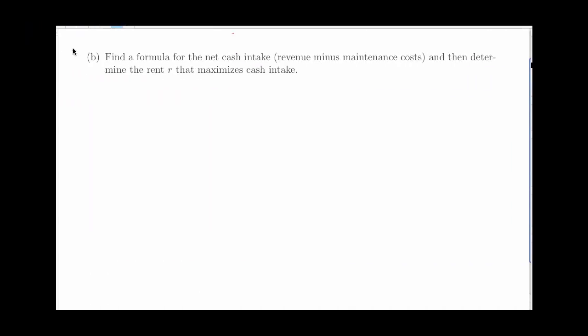Now that we have our number of units rented as a function of the rent price, let's finish the problem off. We need to find a formula for the net cash intake, and then determine the rent that maximizes it. Since I'm trying to maximize cash intake, I definitely need a formula for cash intake. Even if it didn't say so, that would be part of the problem I'd have to do. Now the net cash intake, let's call that I here, it says is revenue minus maintenance cost.